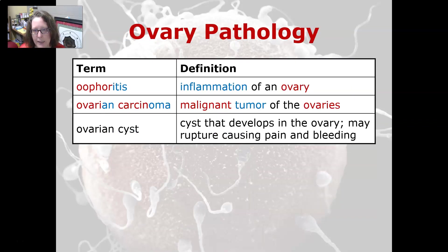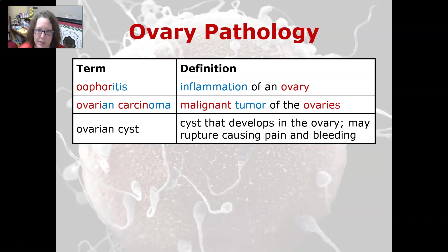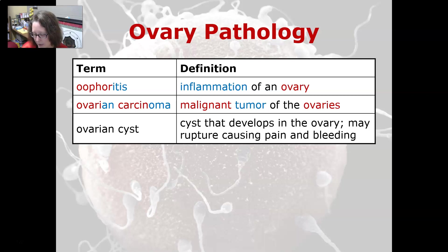Oophoritis is an inflammation of an ovary. An ovarian carcinoma is a malignant tumor of the ovaries. An ovarian cyst is a cyst that develops in the ovary — it may rupture, causing pain and bleeding.